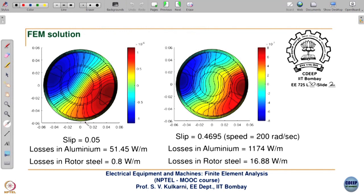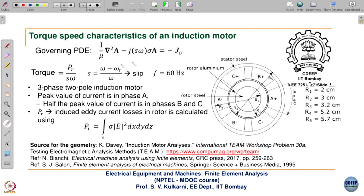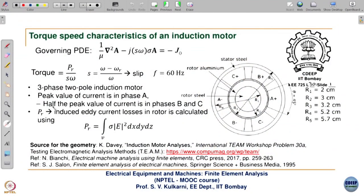Now let us compare the flux plot we have got. As I was explaining, you have one set of contours like this and another set like this. We basically solve this, discretize this — this gives the global coefficient matrix with geometry and material information, the D matrix, and the V_j matrix. Torque is given by rotor losses divided by s times omega, where omega is the synchronous speed in radians per second. S is (omega_synchronous minus omega_r) divided by omega.